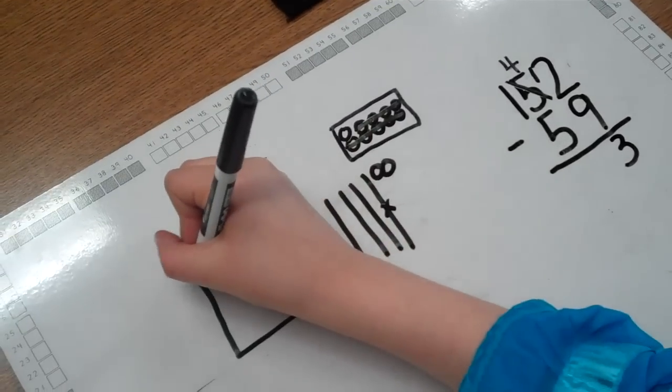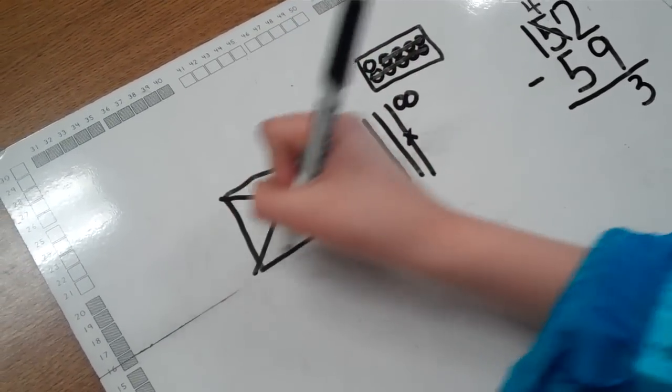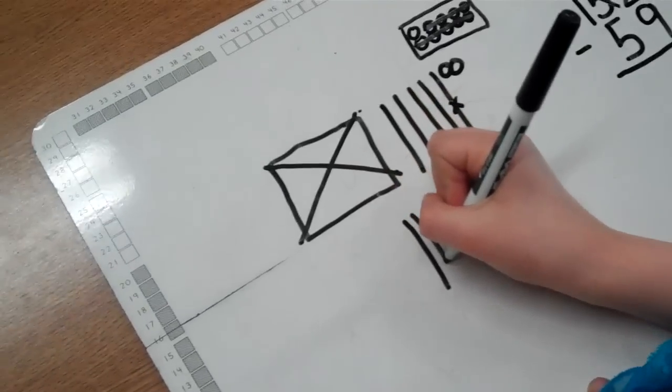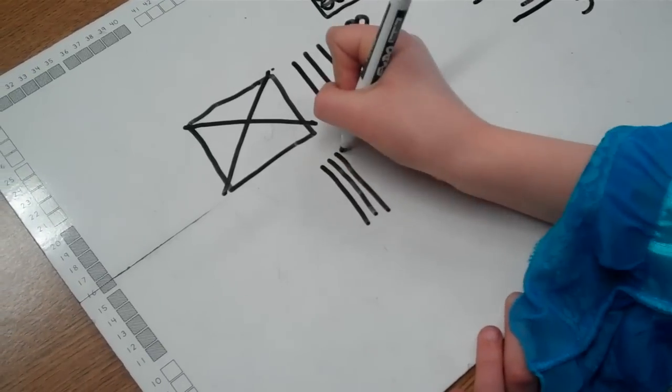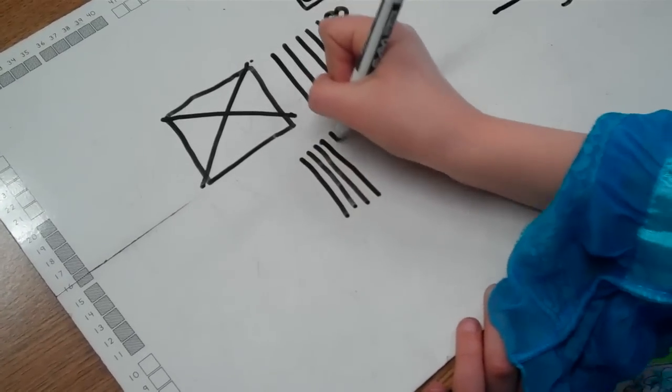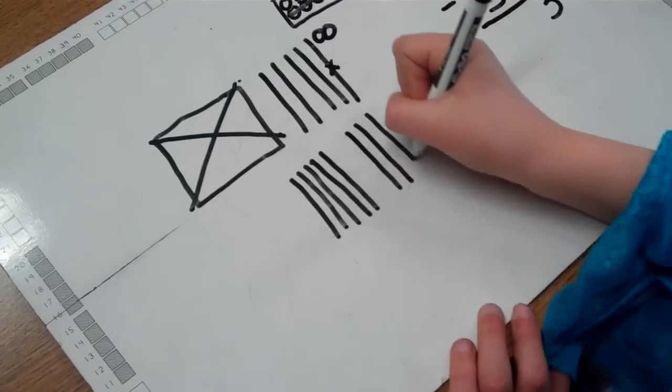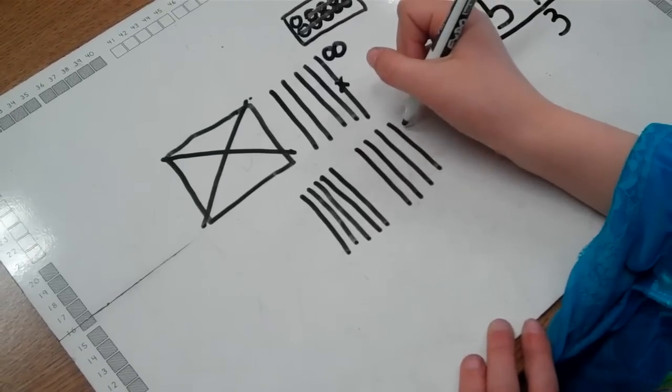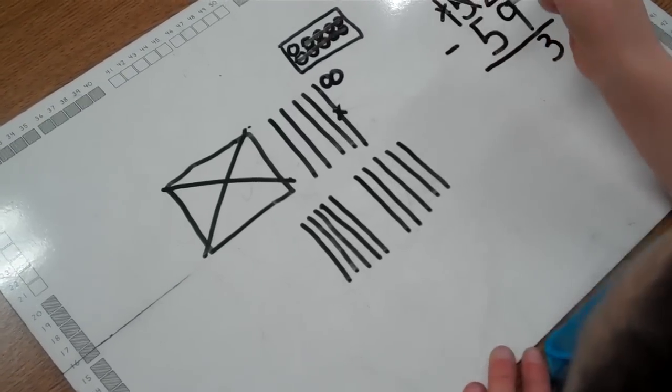Now the student is checking the math drawing to see can I subtract 50 from 40. Since that isn't possible, the student is ungrouping 100 into 10 tens. Now the student will have 14 tens or 140 and they'll be able to subtract 50.